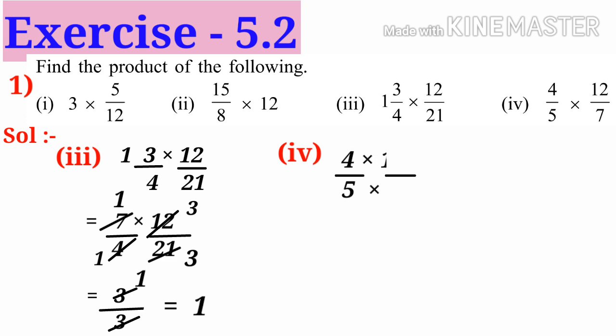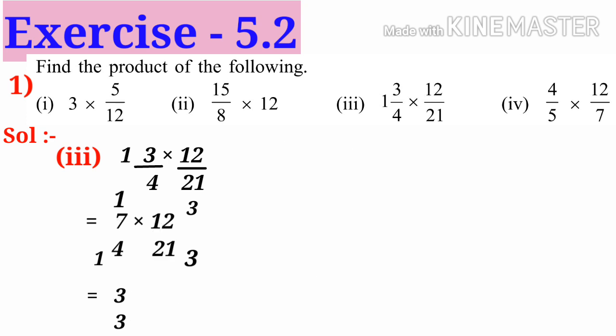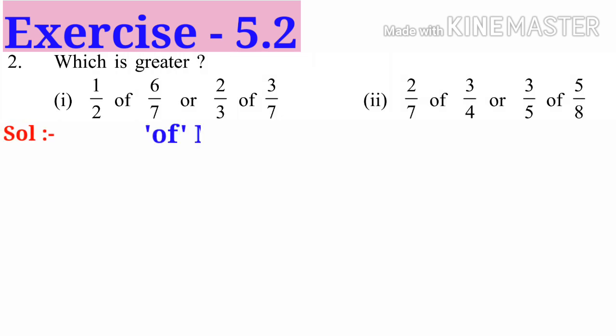Now fourth problem: 4/5 × 12/7. It is just the multiplication of numerators 4 × 12 and multiplication of denominators 5 × 7, that is 48/35.